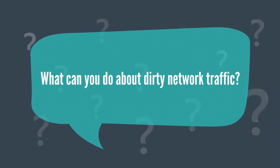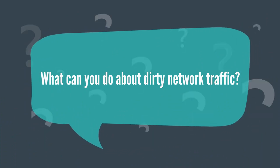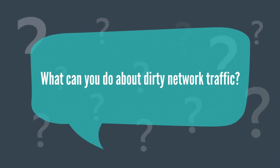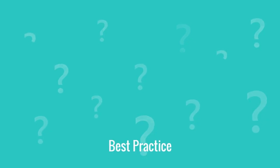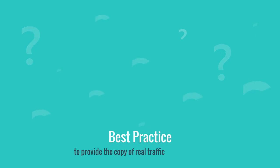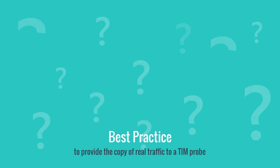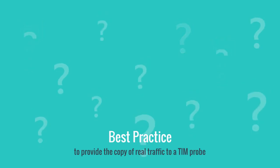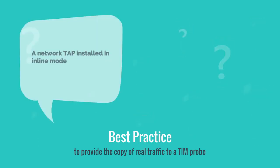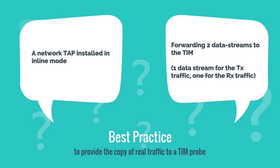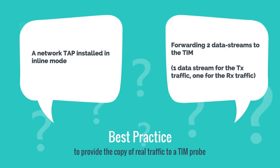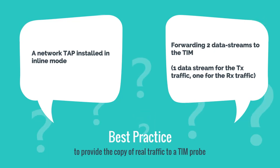What can you do about dirty network traffic? Use this best practice solution for providing a copy of real traffic to a TIM probe: a network tap installed in in-line mode and forwarding two data streams to the TIM — one data stream for the TX traffic, one for the RX traffic.